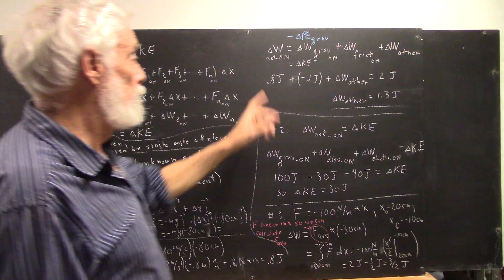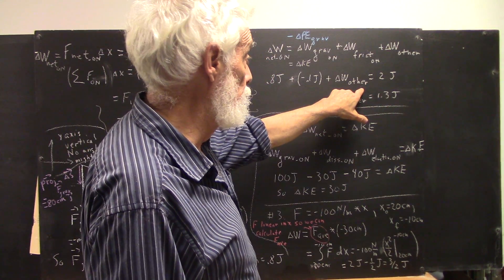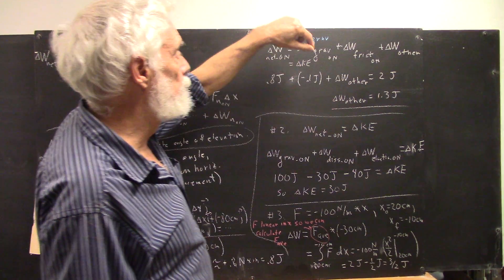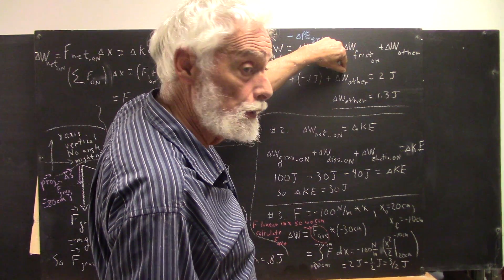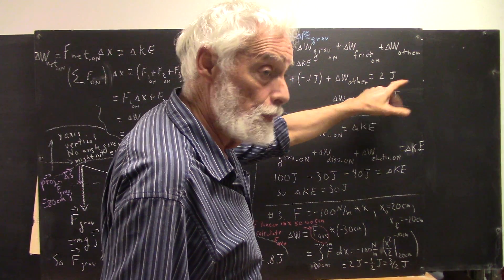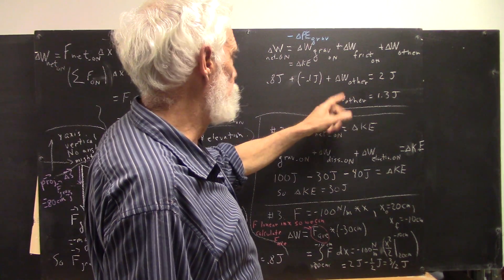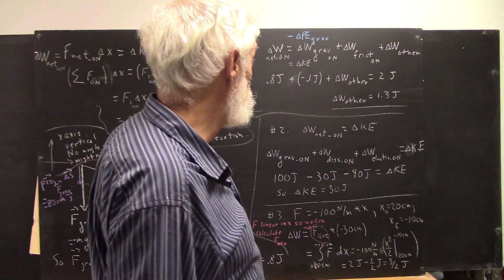What's your conclusion? Well, these have to add up to the 2 joules, because this is the work done by the net force. The work done by the first force, the work done by the second force, and the work done by all the others - it has to equal the change in kinetic energy, which is 2 joules. So the work done by all the other forces is easily found to be 1.3 joules.